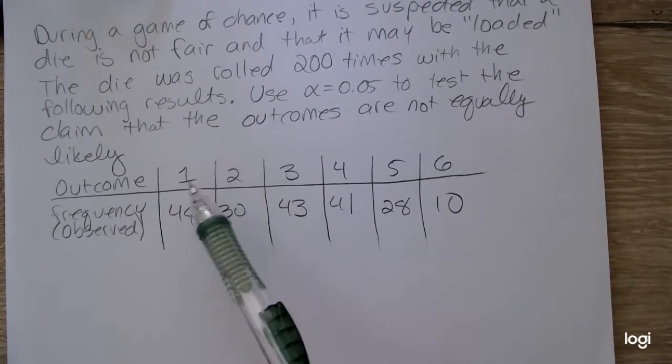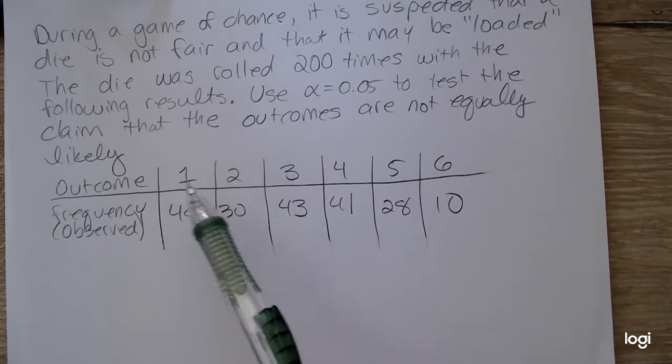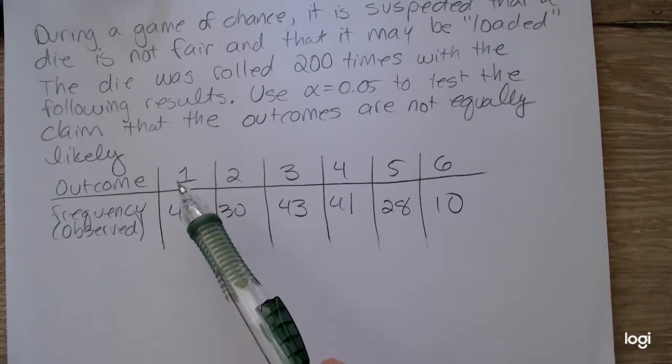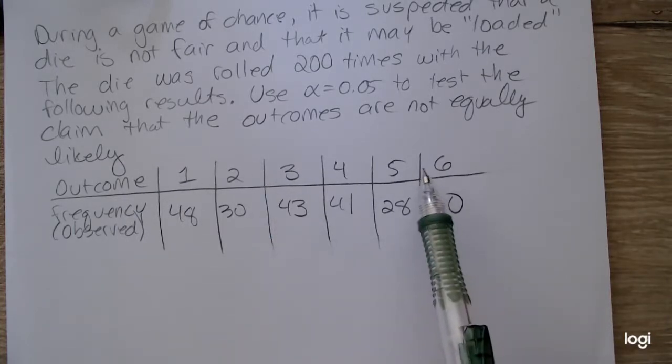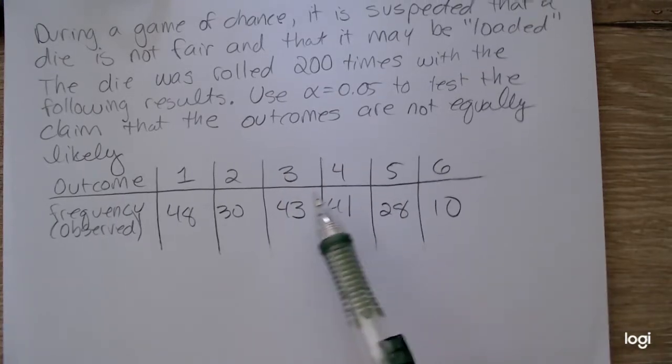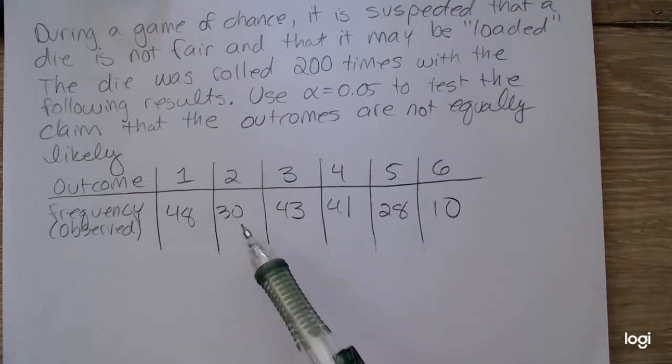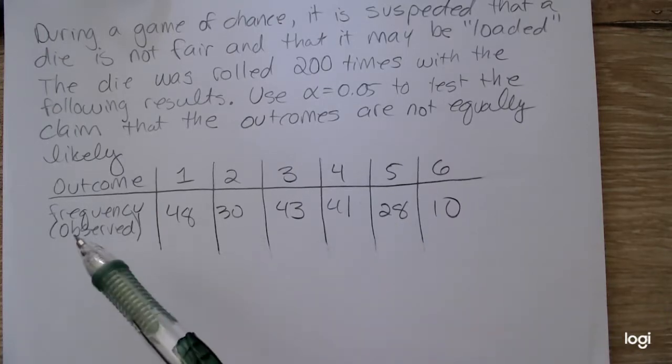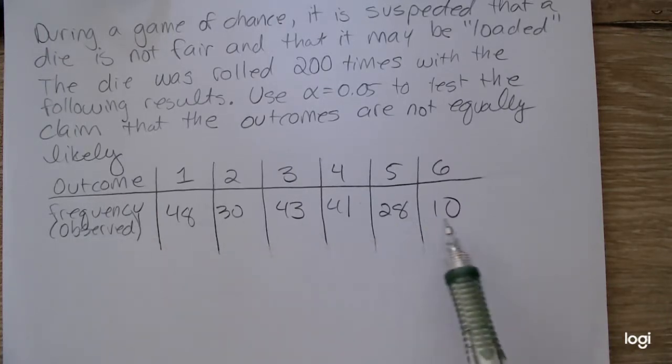So the outcomes on a fair six-sided die are numbers 1 through 6. And when this suspected unfair die was rolled, the counts for each outcome are in the observed frequency row.